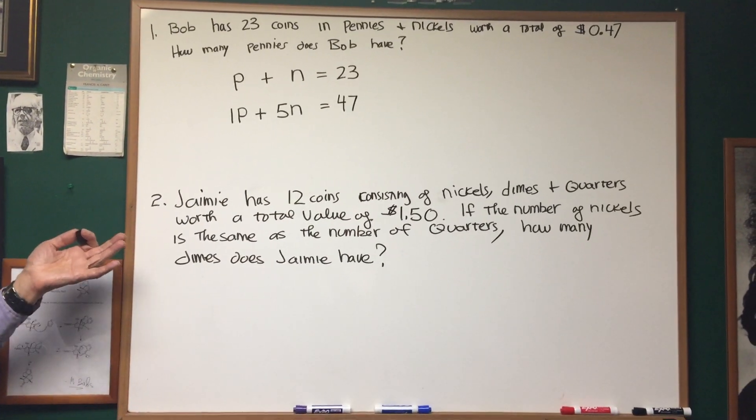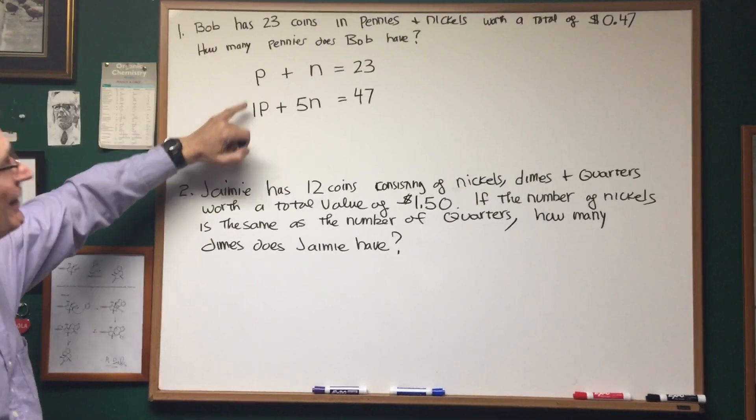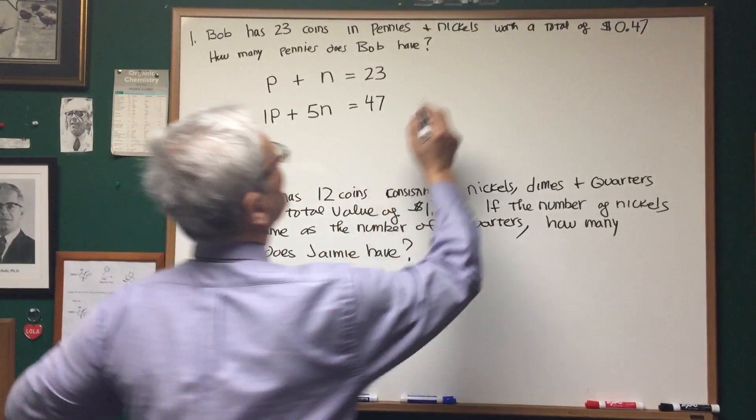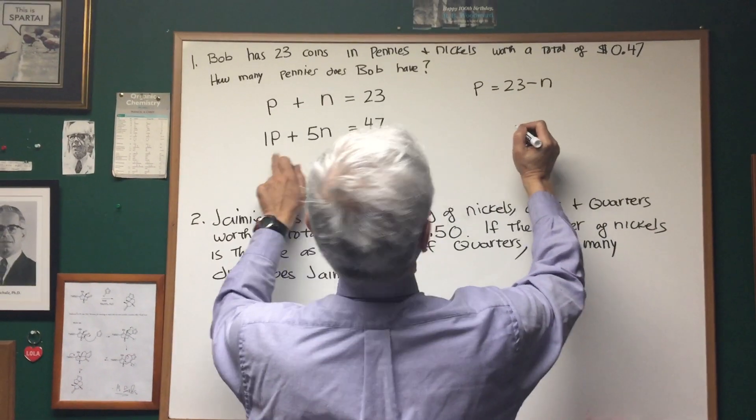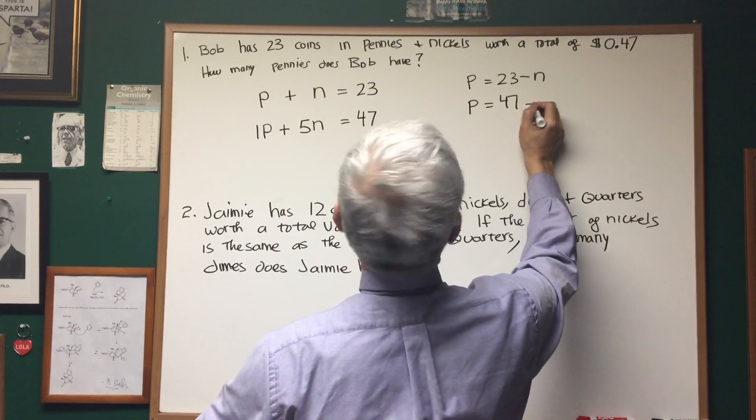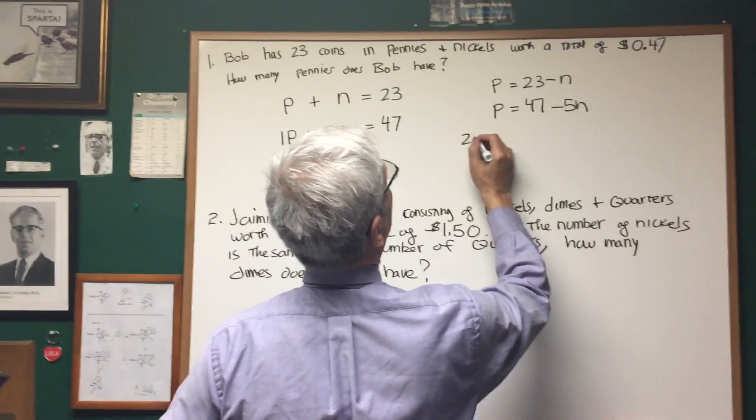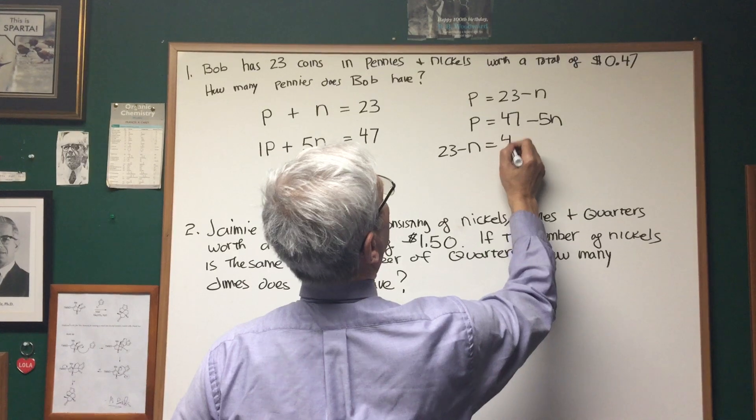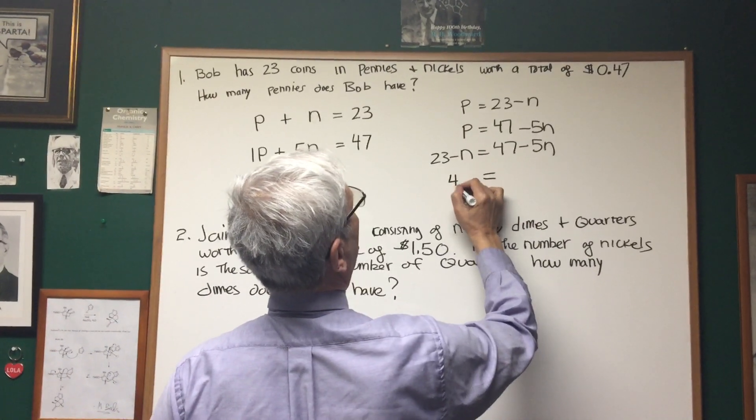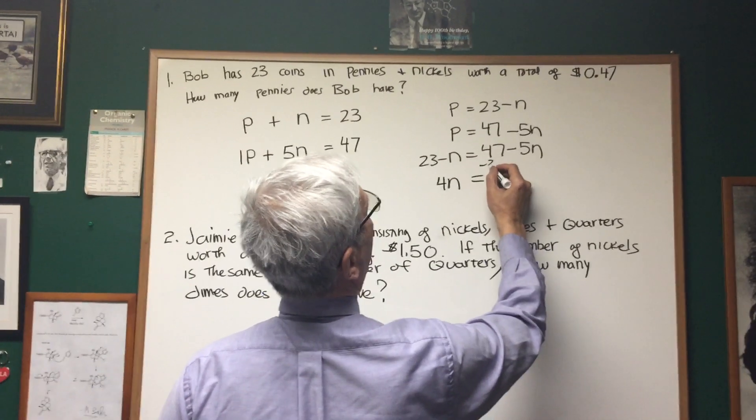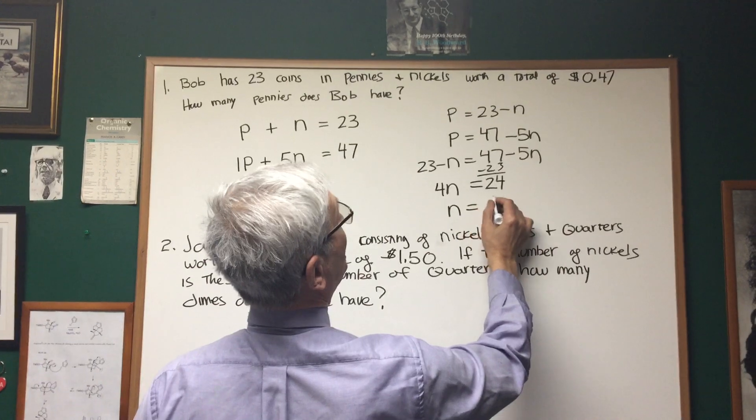There are my two equations totally solvable. How am I going to solve this? Well, one way I can do this, I can take the opportunity of solving for P in each case, simultaneous equations. From the first equation, I can see that P is equal to 23 minus N. From the second equation, I can see that P is equal to 47 minus 5N. Since P is equal to P, I can set those two equations equal to each other. 23 minus N equals 47 minus 5N. Let's do some mental algebra. If I add 5N to both sides, I'll get 4N. If I subtract 23 from both sides, what will I get? 24. Divide both sides by 4, and I get N is equal to 6.